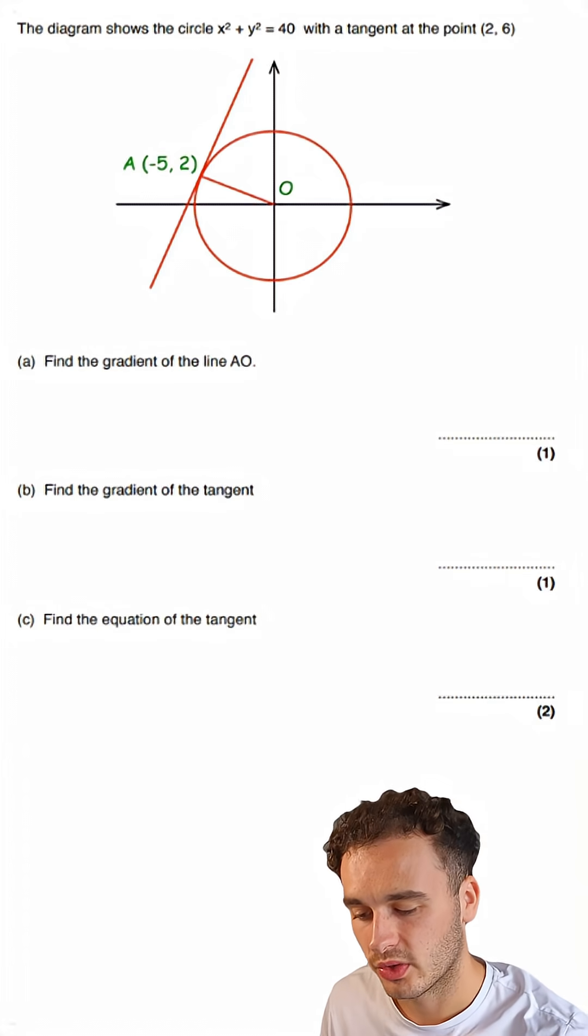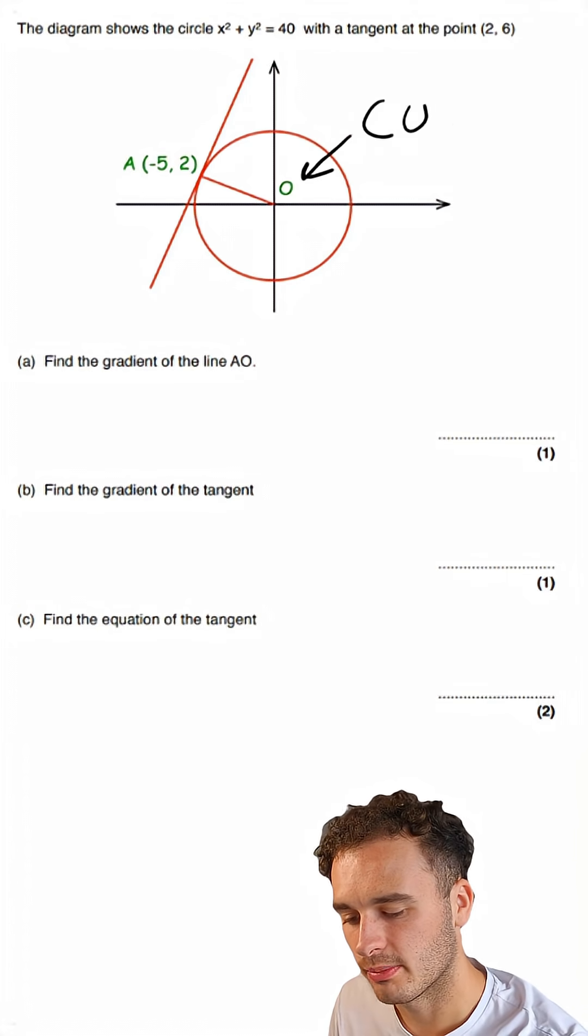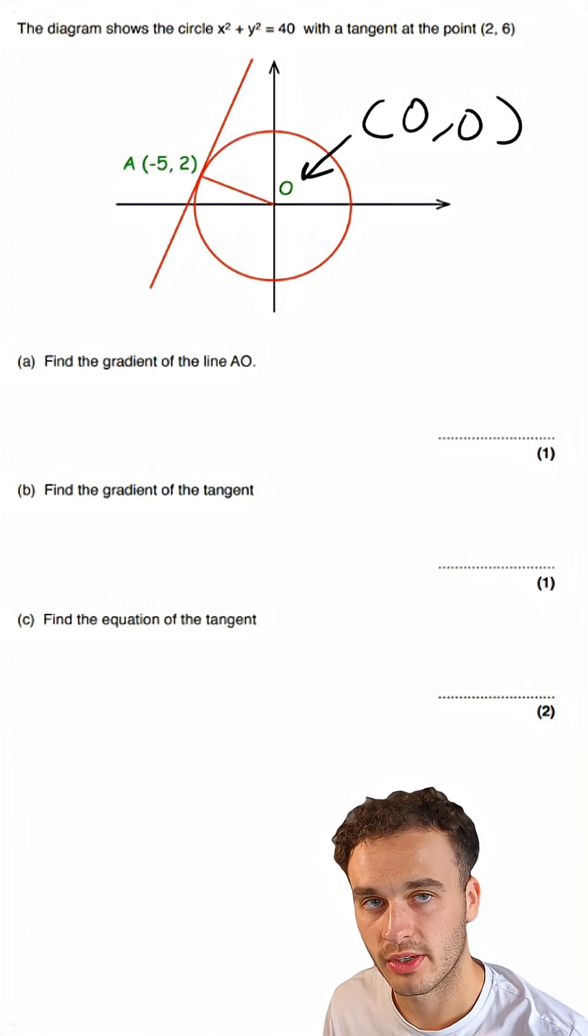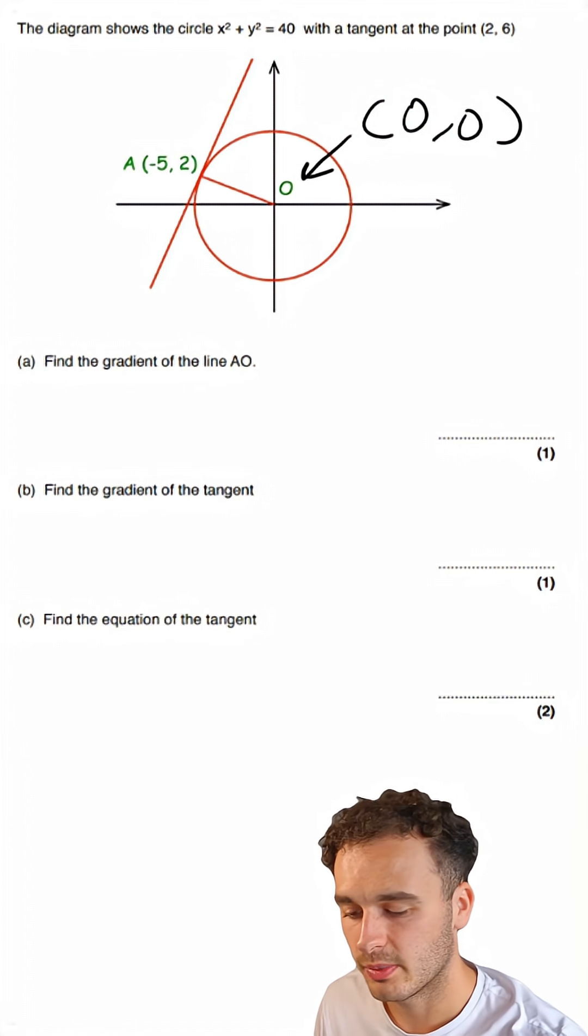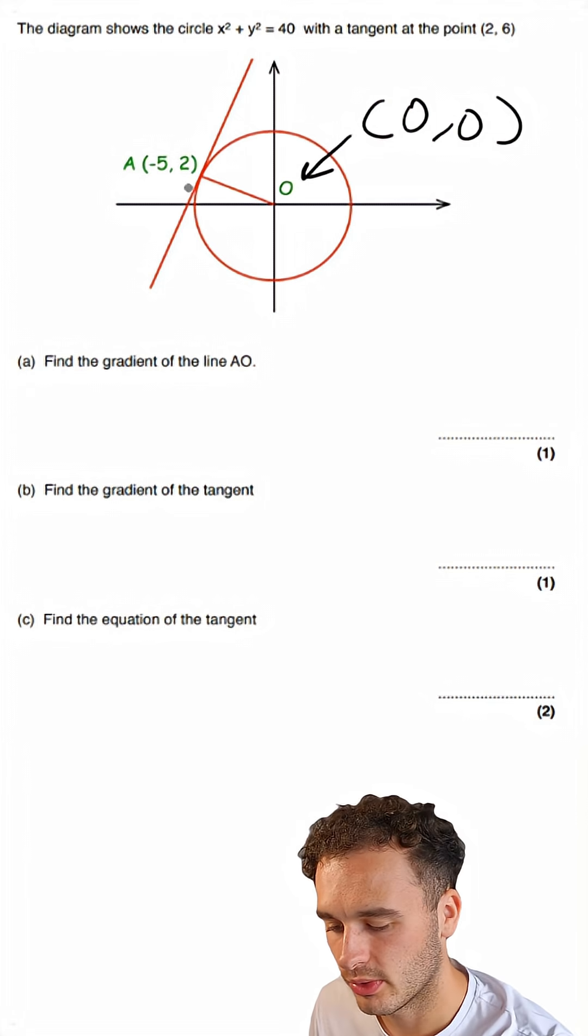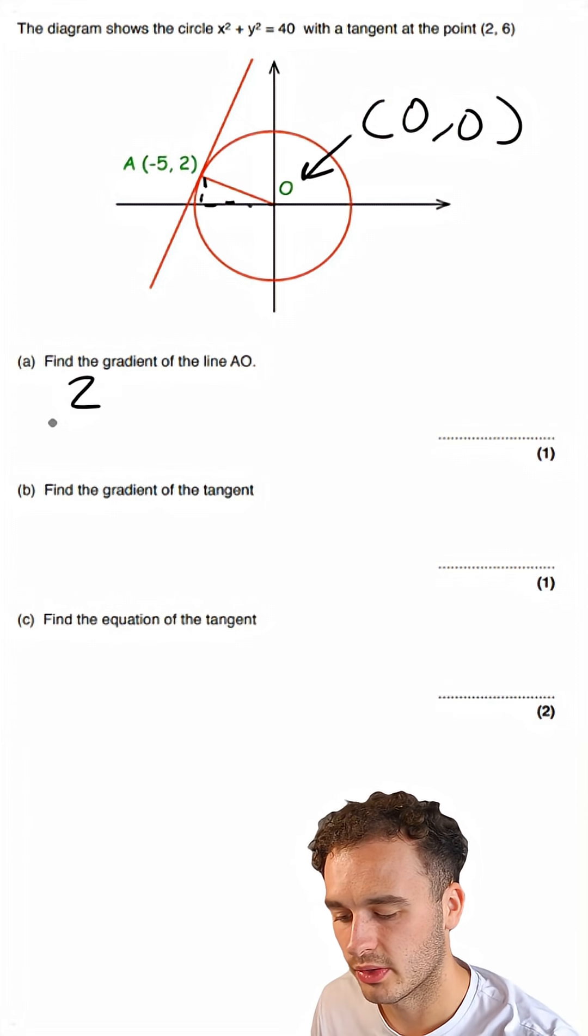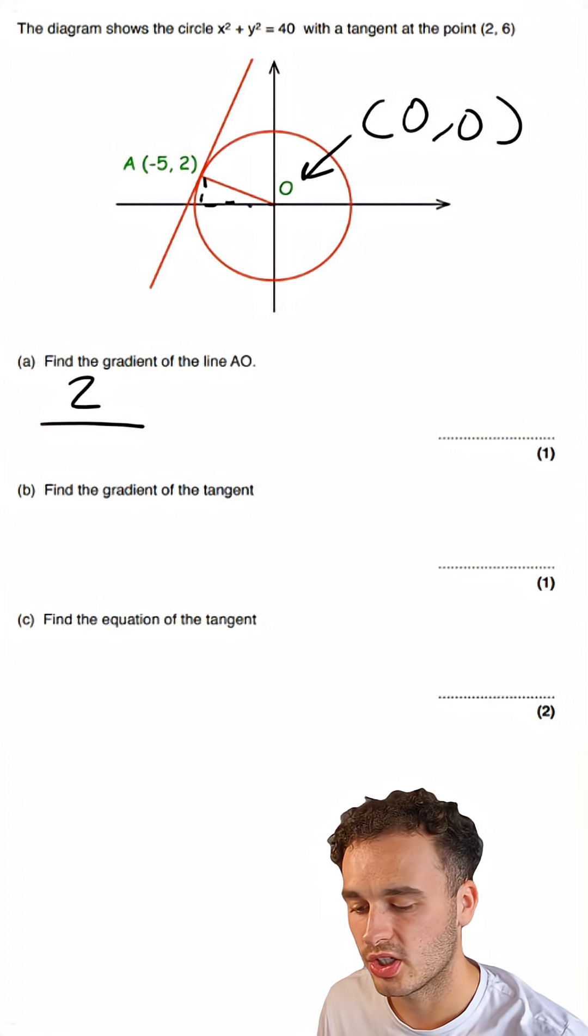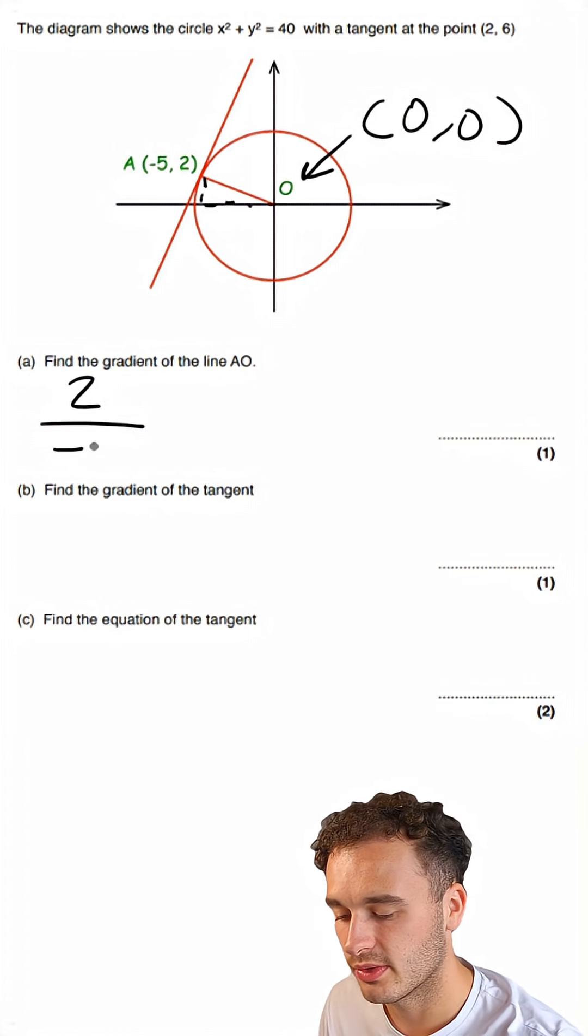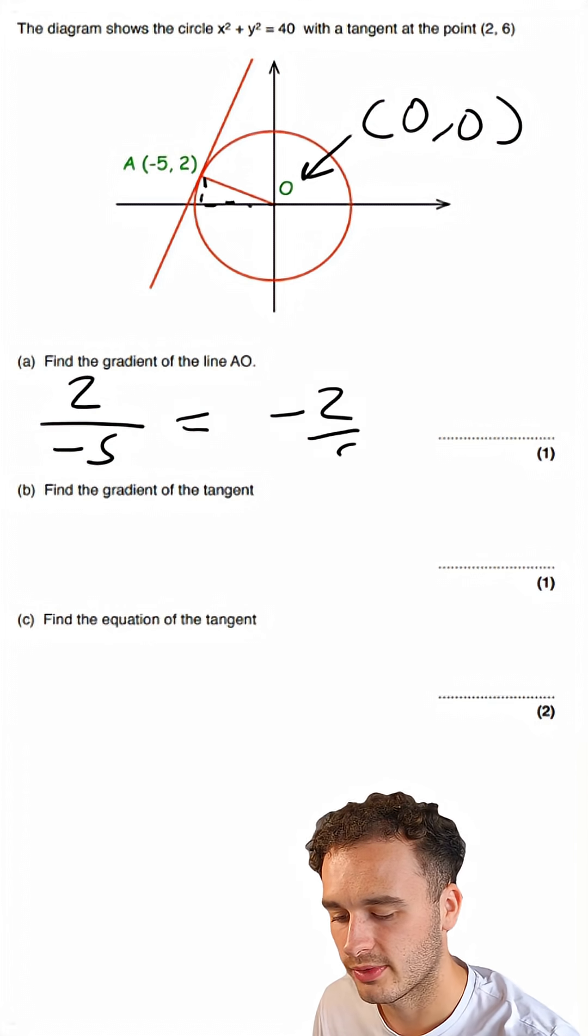Part A asks us to find the gradient of AO. Firstly, we need to understand that O is the origin, meaning it has coordinate (0, 0). To find the gradient of this line, we need to do the change in Y over the change in X between these two points. So the change in Y is just 2, because 0 to 2 is 2, and the change in X is minus 5, because 0 to minus 5 is minus 5. So the gradient of AO is minus 2 fifths.